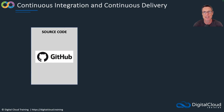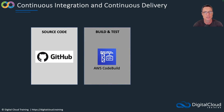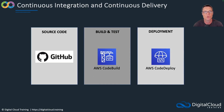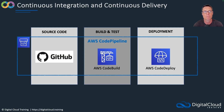In CI/CD we have different stages. First we have our source code — this is where we store our code in a repository. Then we have build and test, which in this case could be CodeBuild. Then we have deployment to the application, which in this case is AWS CodeDeploy. There can be other stages as well, such as manual approvals and additional levels of testing. We can create the automation for all of this in the AWS world using CodePipeline — a service used to create the pipeline that integrates these different components, causing events from one service to trigger the next one in the pipeline.